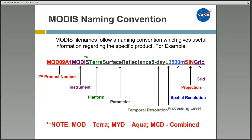Continuing with the MODIS naming convention: the platform can be Terra, Aqua, or combined. The name indicates the parameter — in this case, surface reflectance. It then provides the temporal resolution, such as 8-day, 16-day, or monthly. Finally, it provides the processing level, the spatial resolution, the projection — in this case sinusoidal — and the file type.